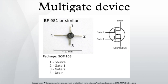Tri-gate, or 3D transistor fabrication, is used by Intel Corporation for the non-planar transistor architecture used in Ivy Bridge and Haswell processors. These transistors employ a single gate stacked on top of two vertical gates, allowing for essentially three times the surface area for electrons to travel. Intel reports that their tri-gate transistors reduce leakage and consume far less power, allowing up to 37 percent higher speed or power consumption under 50 percent of the previous transistor type. The additional control enables maximum transistor current when on and near zero when off, with very fast switching between the two states.